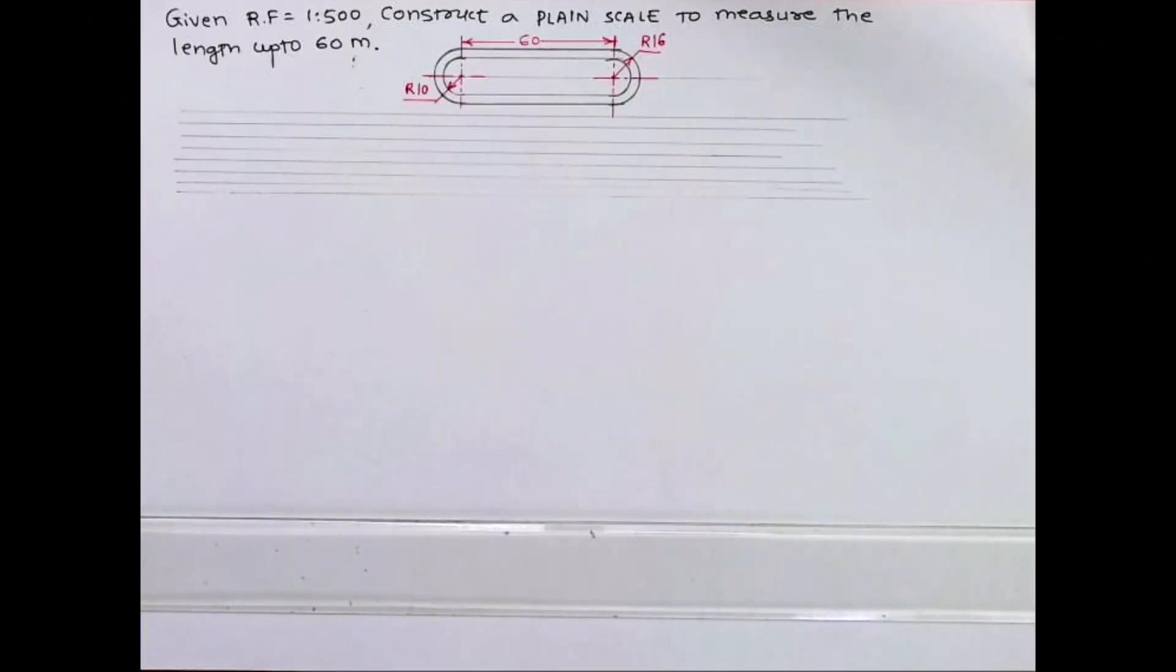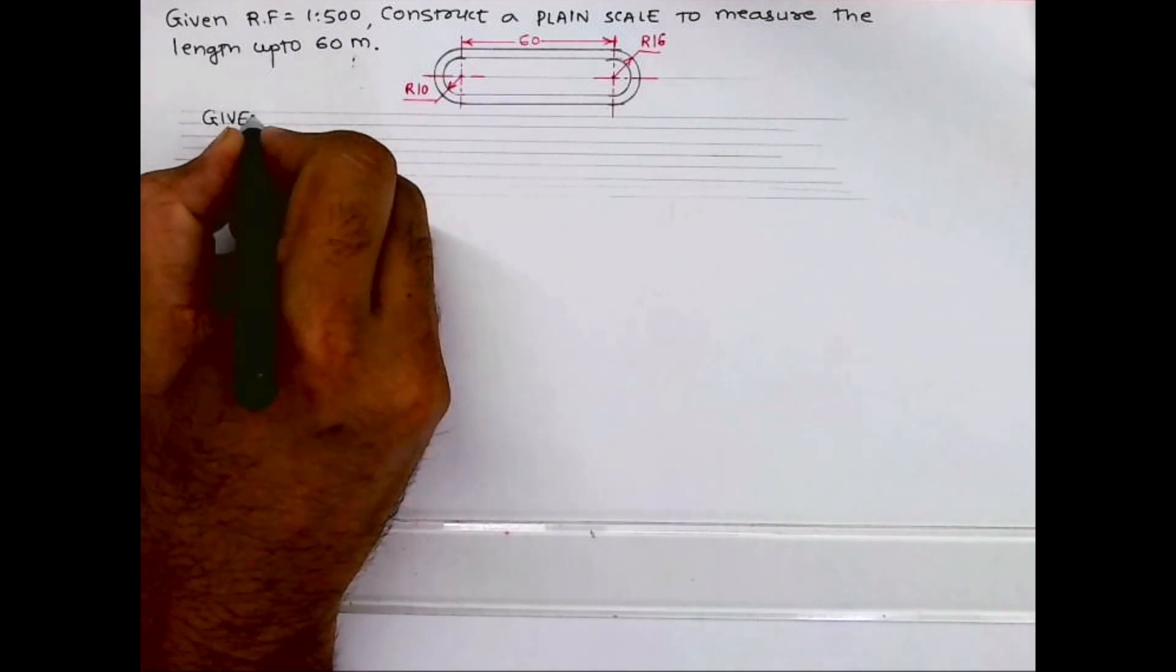Welcome to technical drawing. Today we'll solve this problem. Given RF is 1 upon 500, we have to construct a plain scale to measure up to 60 meters and then draw this diagram.